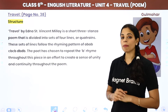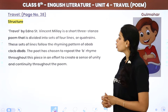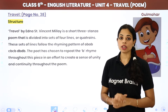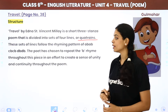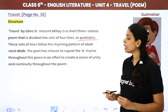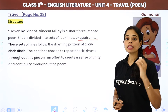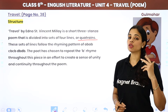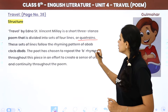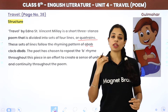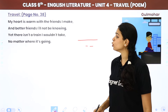Now let's look at the structure. Travel by Edna St. Vincent Millay is a short three-stanza poem divided into sets of four lines — these sets of four lines are called quatrains. These sets of lines follow the rhyming pattern of ABAB, CBCB, DBDB. In each stanza, the first and third lines rhyme, and the second and fourth lines rhyme.